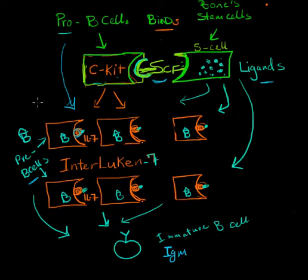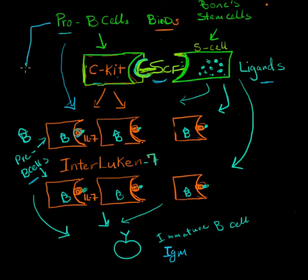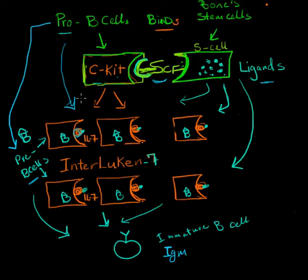We know that B cells make antibodies and are made in the bone marrow. What we want to talk about here is how B cells are developed. They start with what is called pro B cells, then they go from pro B cells to pre B cells. This happens because pro B cells get attached to stem cells in the bone marrow. If they don't get attached to the stem cells, they cannot differentiate — they will always remain pro B cells.